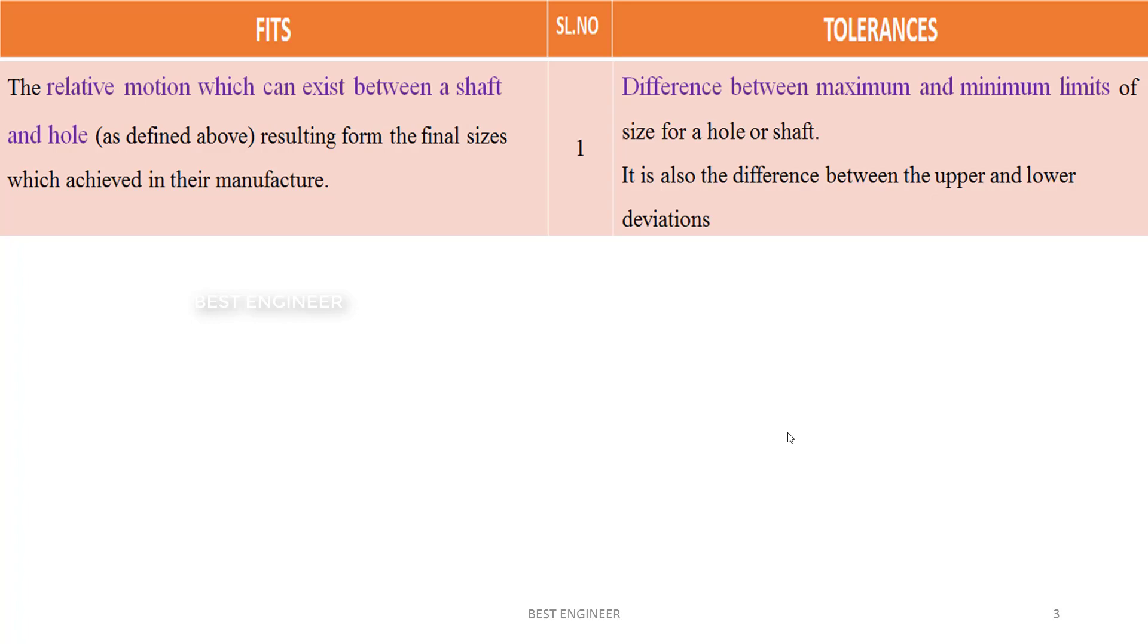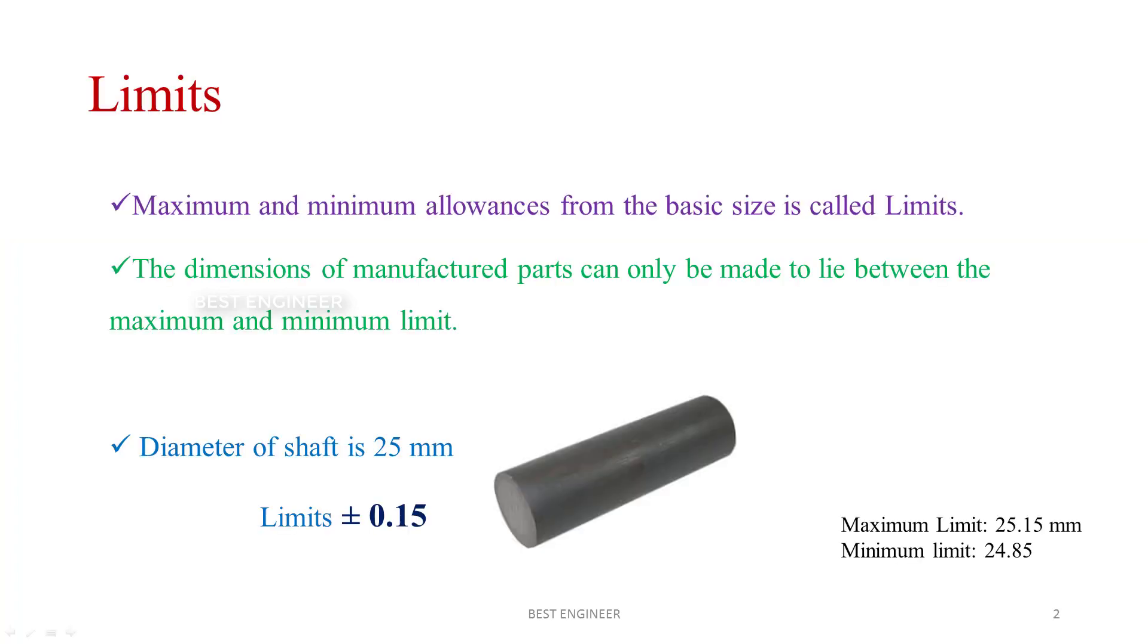And tolerance are the difference between the maximum and minimum limits. Here, we can see that the tolerance is upper 0.15, lower 0.15. Totally, 0.3 is the tolerance for this shaft.